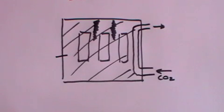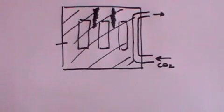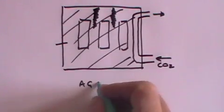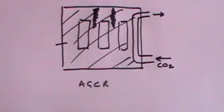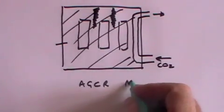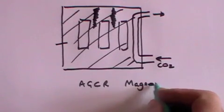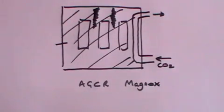And that is called an Advanced Gas-Cooled Reactor, AGCR. The earlier version of which was called a Magnox. So there are some Magnox reactors left, which are early versions of this advanced gas-cooled reactor.